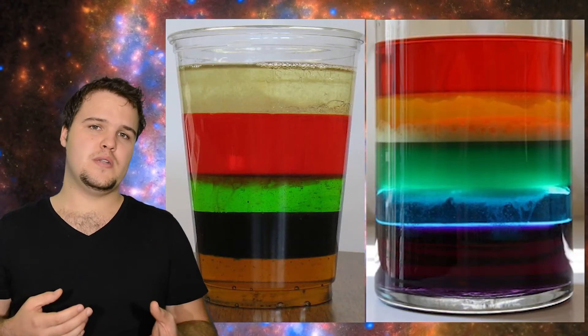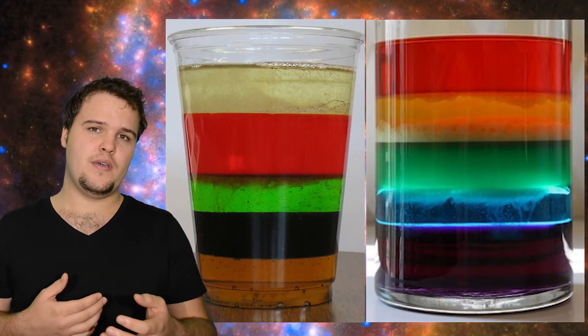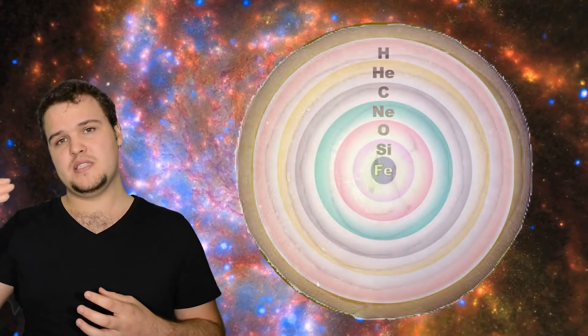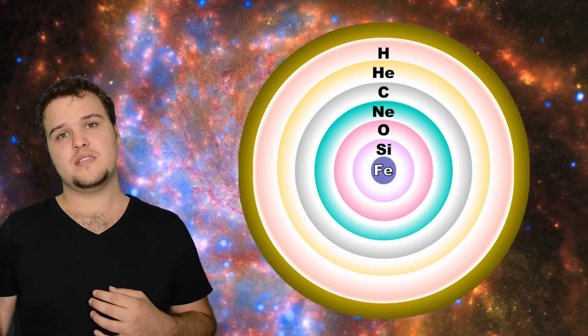This extra energy pushes outwards on the star, forcing it to expand. Eventually, gravity will become so strong that it can start fusing the helium into heavier elements like carbon and oxygen. This will continue to happen for heavier and heavier elements. Each heavier element will sink to the core, similar to how different liquids separate in a cup. This makes the core layered like an onion, with heavier elements in the centre and lighter elements on the outside.